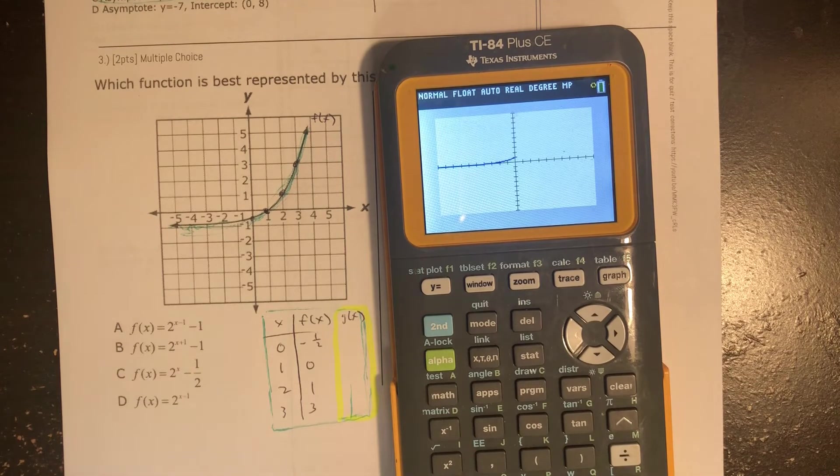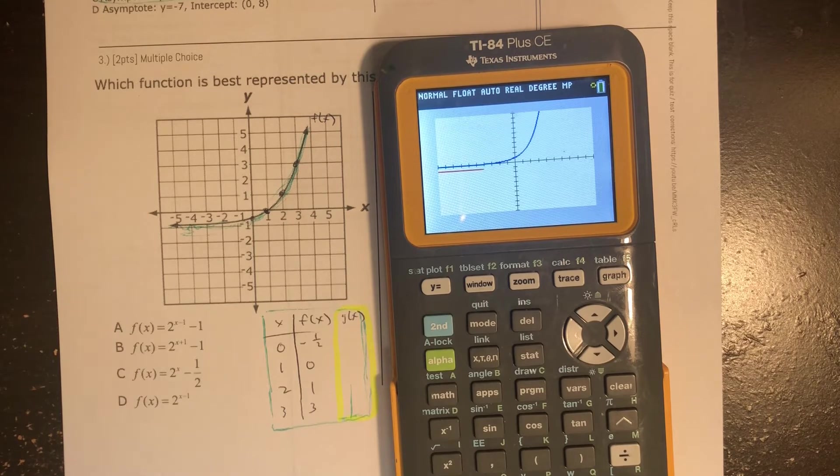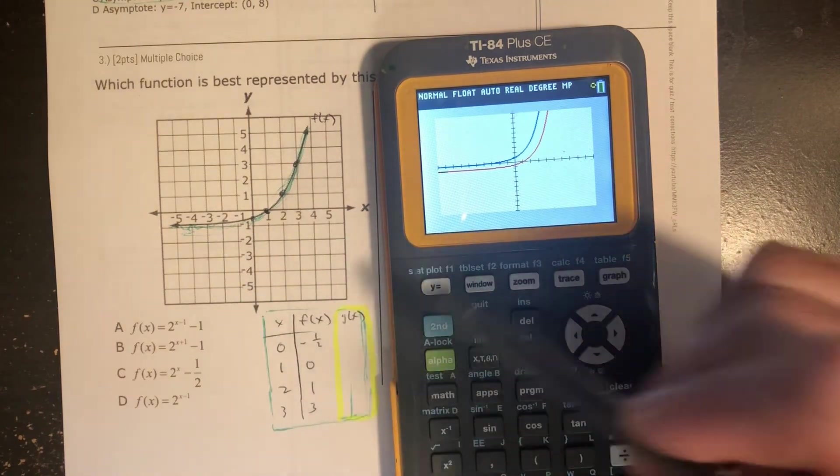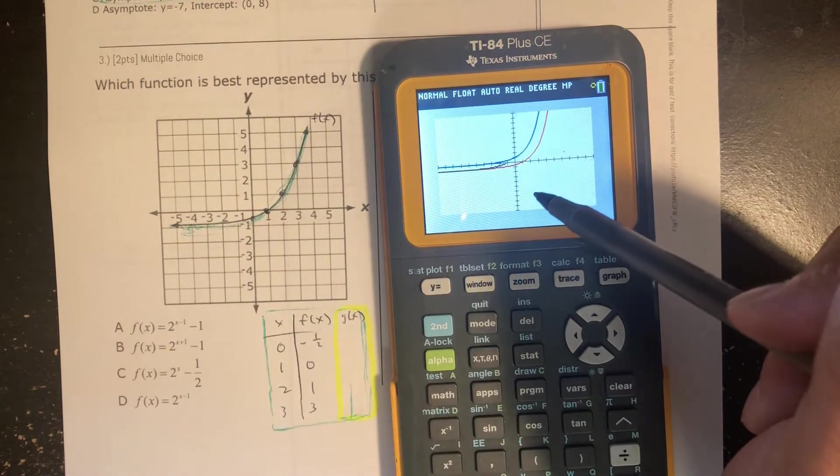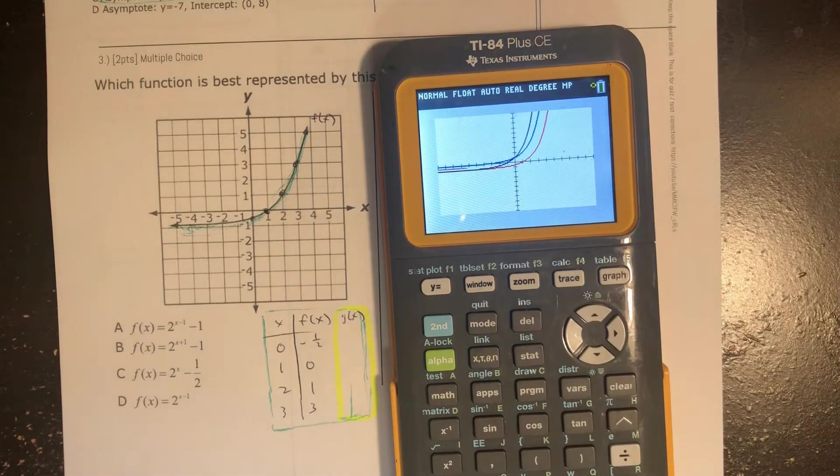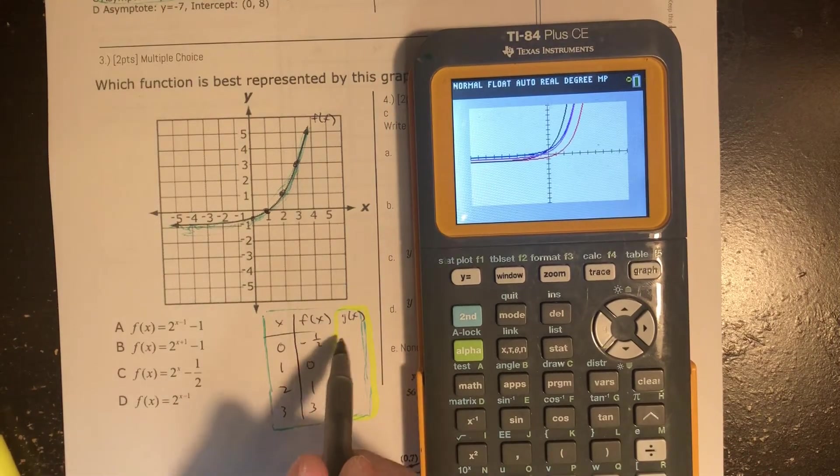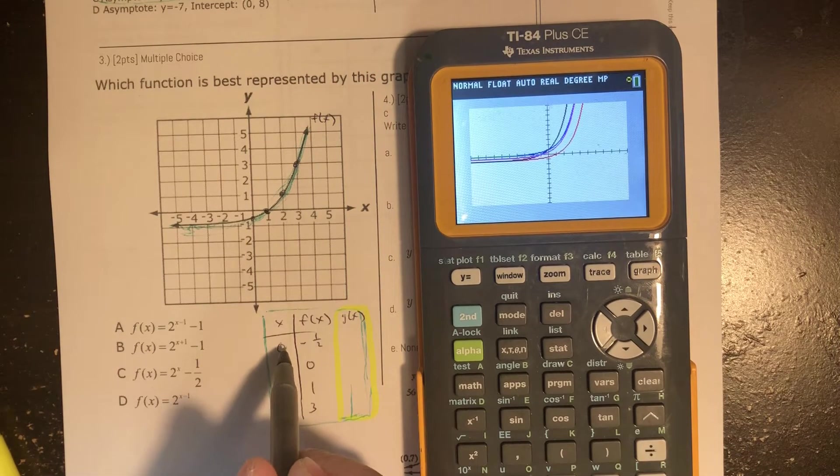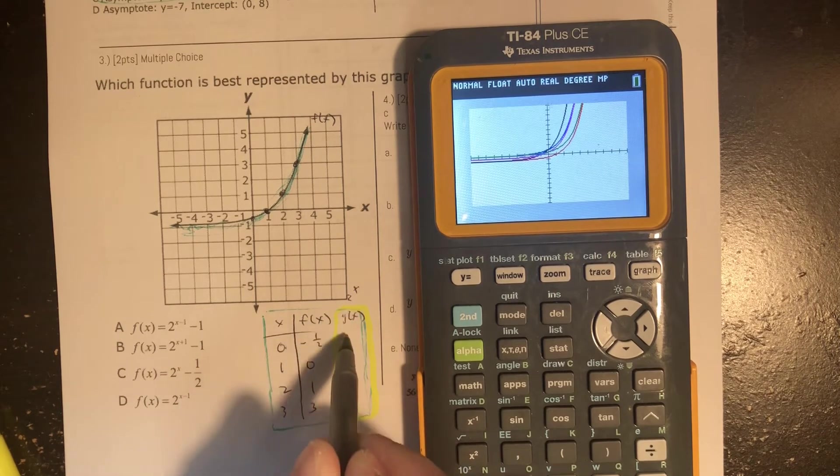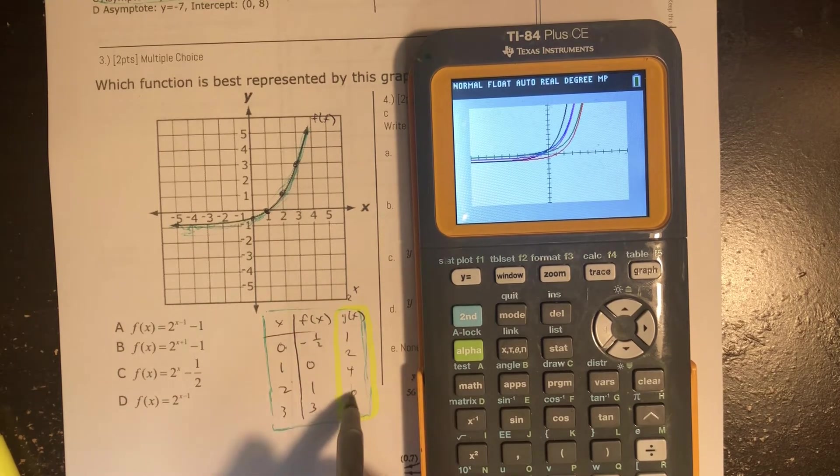So here's the parent graph. And I'm kind of looking for the one that kind of looks like this green one. So if you graph the parent function, let's go ahead and do that once loading up all of those. 2 to the 0 power, that would be 1. 1, 2. 2, 4. And 3, 8.